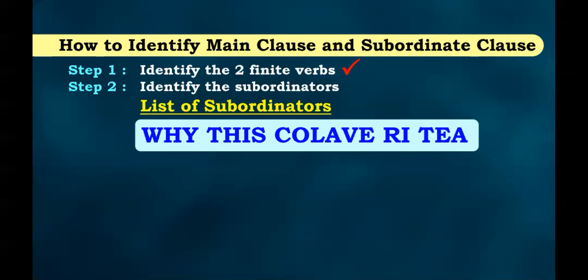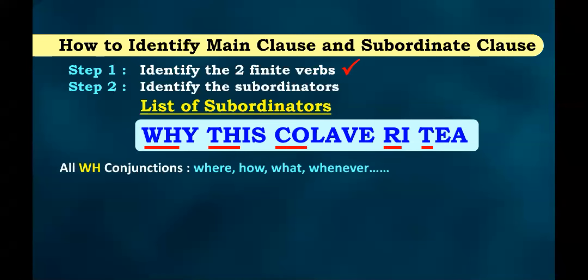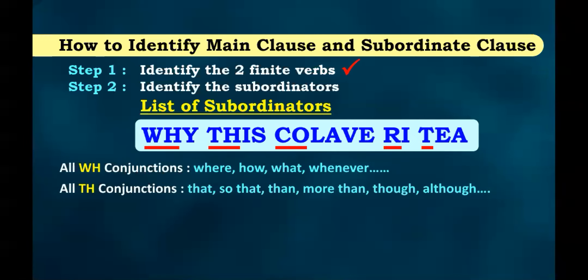Here is an acronym to remember subordinators - WHTHCORT. WH stands for all WH conjunctions: what, when, where, why, who, whom, whose, whatever. TH stands for TH conjunctions: that, so that, than, more than, though, although, even though, as though. CO stands for condition conjunctions: if, unless, whether, provided.